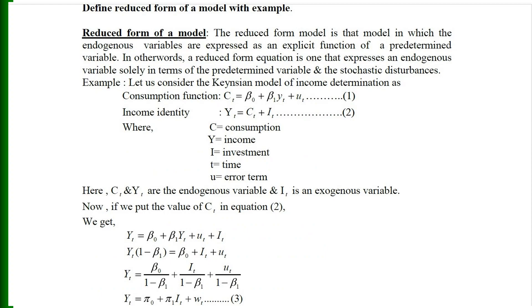The reduced form of a model is that model in which the endogenous variables are expressed as explicit functions of predetermined variables only. In other words, a reduced form equation expresses an endogenous variable solely in terms of the predetermined variables and stochastic disturbances. For example, consider the Keynesian model: C_t = β₀ + β₁Y_t + u_t, and income identity Y_t = C_t + I_t, where C and Y are the endogenous variables and I is an exogenous variable.